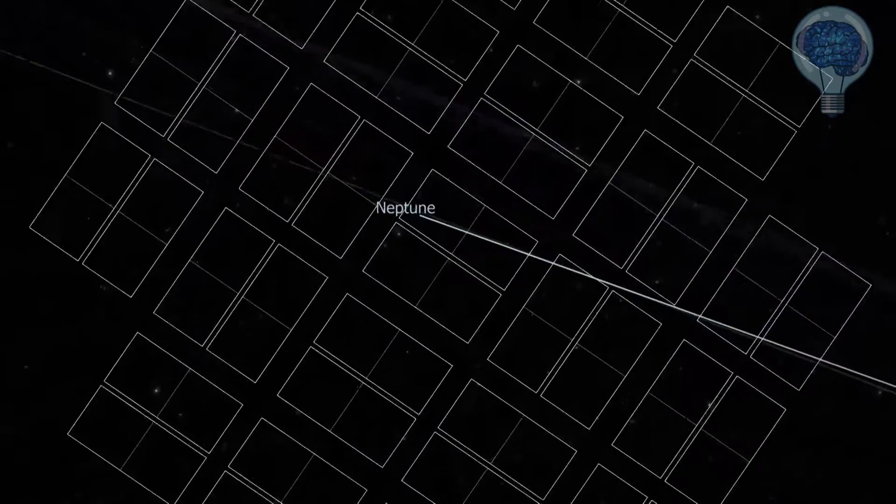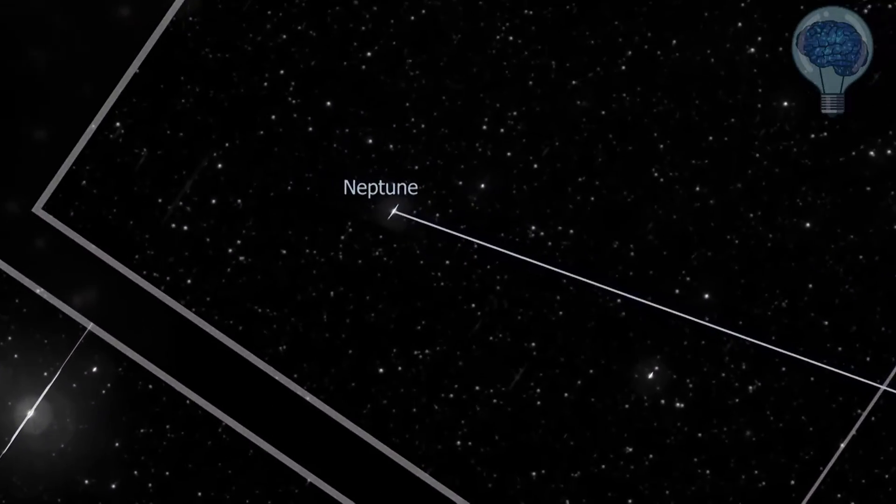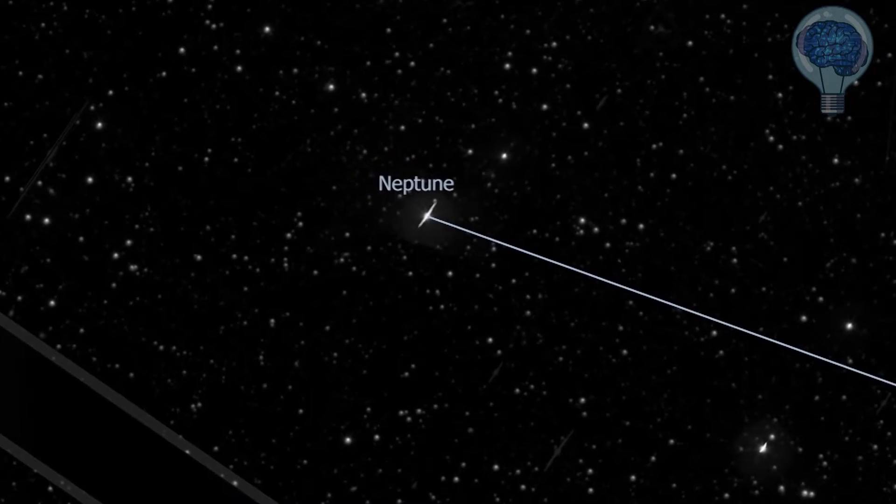As we zoom in to Kepler's array of detectors, we see the images taken by the telescope during this period sped up from over two months of observations into a matter of seconds.